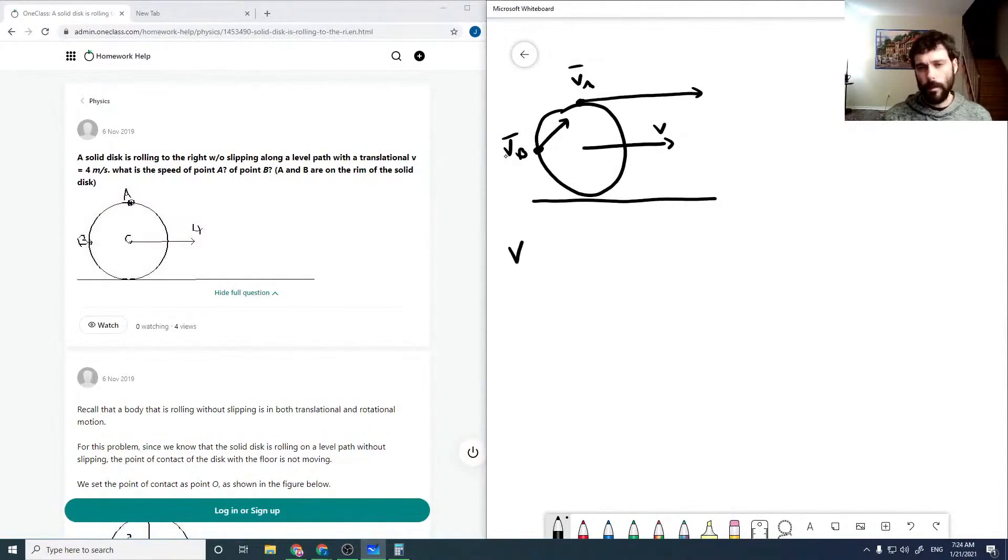The reason I say that is because VA is going to be our center of mass velocity plus our rotational velocity. Actually, both VA and VB are going to be our center of mass velocity plus our rotational.